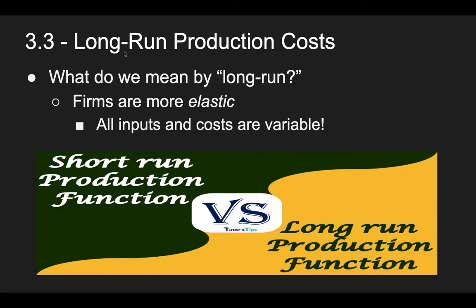3.3 is titled Long Run Production Cost. So what do we mean by the long run? As opposed to the short run, where firms are more inelastic — meaning they can't really change much about their current operations and their inputs — in the long run, we have a lot more flexibility because there's a longer period of time for us to act. So firms are more elastic, and because of that, all inputs and costs are really variable. Everything is variable because we're talking about a large space of time in which a lot of changes could be made, even to things that in the short run would be considered fixed.